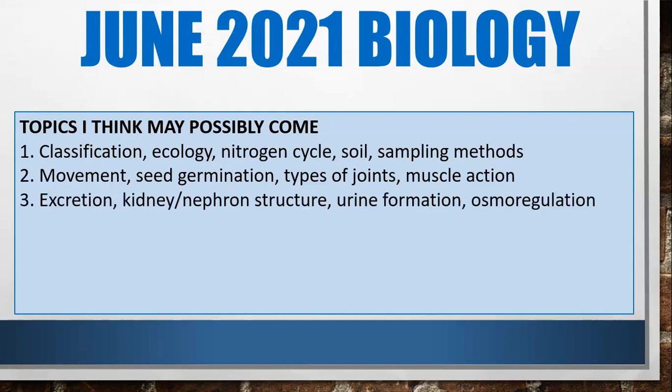Thirdly, excretion — kidney and nephron structure, urine formation, osmoregulation. I've seen this come on the HSB paper recently, but I haven't seen a diagram of the nephron or the kidney in a while. So there's a possibility they could bring some kind of excretion and osmoregulation-type question.